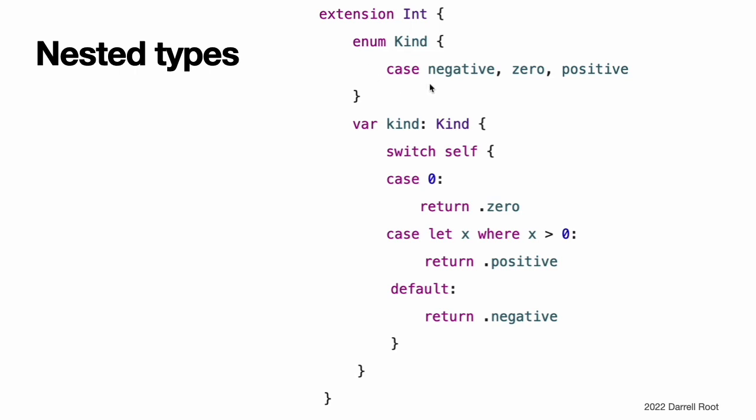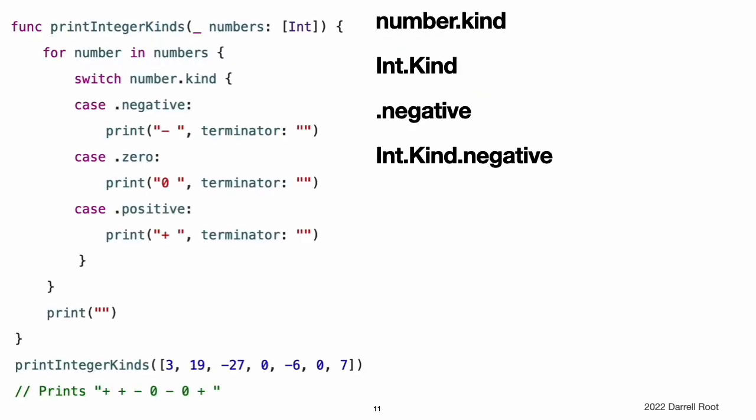This example also adds a new computed instance property to int, called kind, which returns the appropriate kind enumeration case for that integer. The nested enumeration can now be used with any integer value.